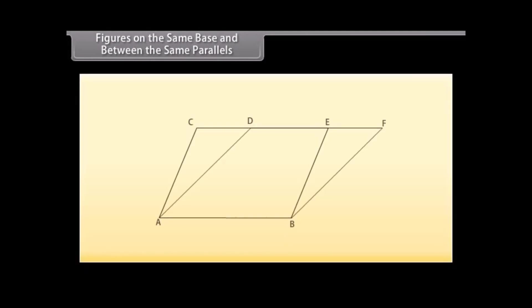Figures on the same base and between the same parallels. Now look at this figure. We can see that parallelogram ABC and the parallelogram ABFD are on the same base AB. Also, the vertices CE of the parallelogram ABC opposite to AB and vertices D and F of the parallelogram ABFD opposite to AB lie on the same line CF which is opposite to AB. So we can say that both the parallelograms lie on the same base AB and between the same parallels AB and CF.